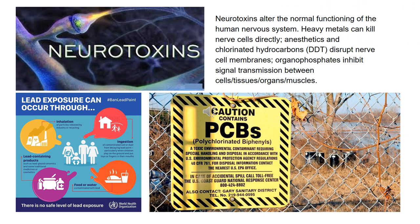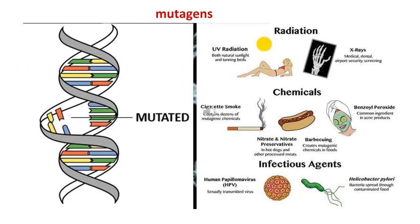Neurotoxins are environmental toxins that affect the normal functioning of nervous systems in humans and other organisms. Heavy metals like lead can kill nerve cells directly; DDT can disrupt nerve cell membranes; organophosphates inhibit signal transmission between cells, tissues, organs, and muscles; and PCBs also fall into this category. Mutagens are chemicals or agents that damage or alter genetic material — DNA — and can lead to birth defects or, later in life, tumor growth. Mutagens can be chemicals, infectious agents, or radiation, such as from the sun. Sometimes they cause cells to divide at a rapid, uncontrolled rate, producing tumors.